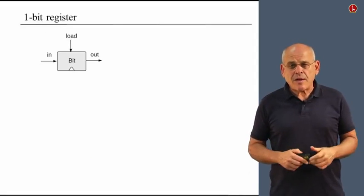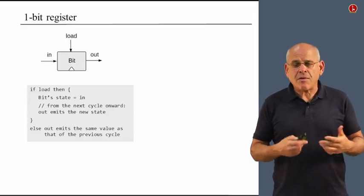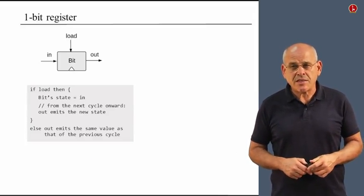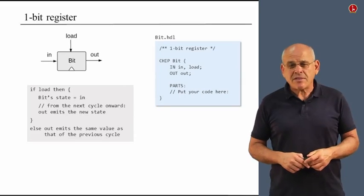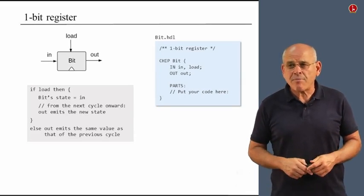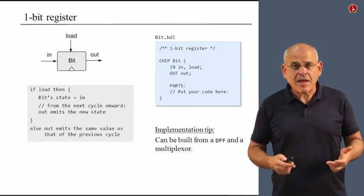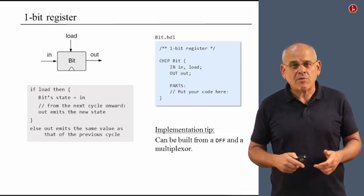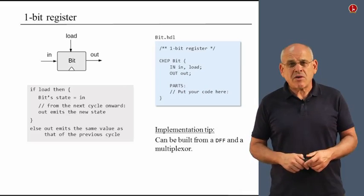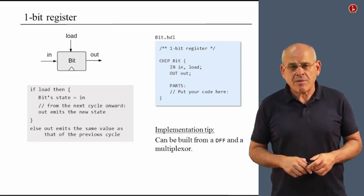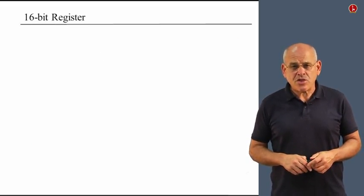So let us begin with the one bit register, whose diagram and documentation is repeated here. We've discussed it before. Here is the stub file, there's nothing special about it. And the implementation is something that Noam described in previous units. So you can just follow what is written here and build this chip in HDL.